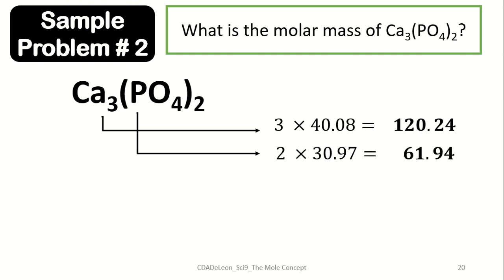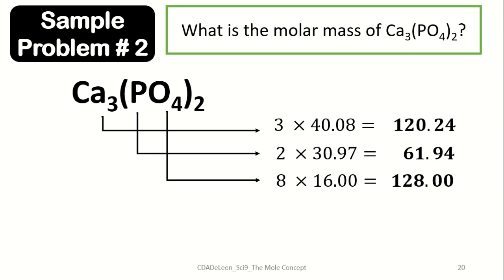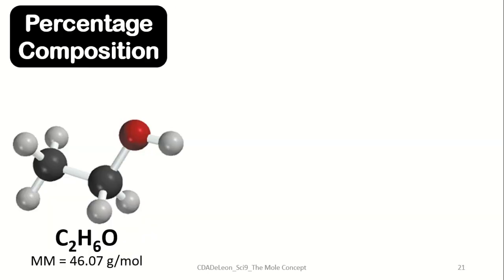Oxygen has eight atoms — since four times two — multiplied by the atomic mass of oxygen, which is 16. So 8 times 16 is equivalent to 128. Getting the sum of these atomic masses gives us 310.18 grams per mole.